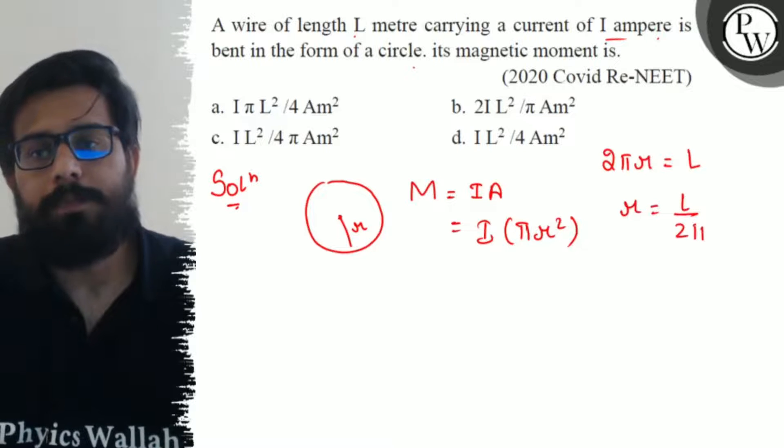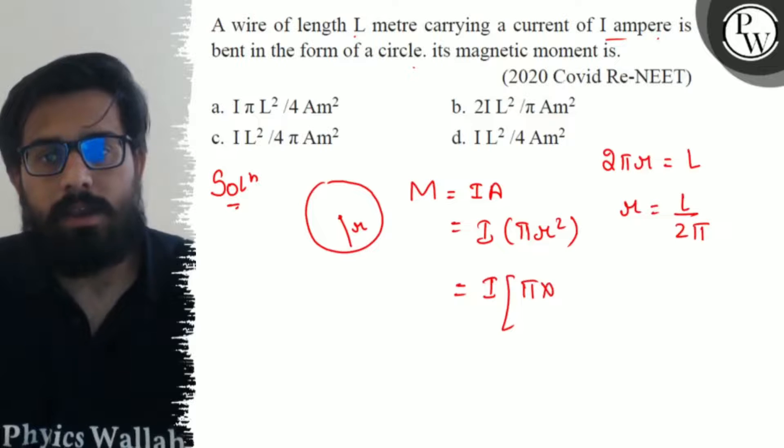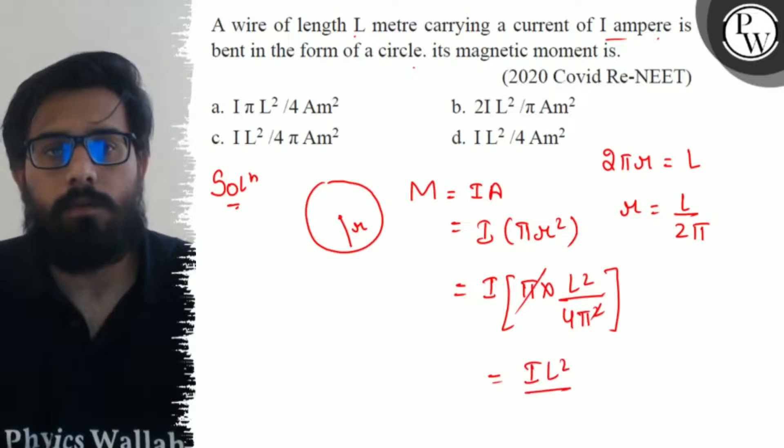So putting the values: I into π into r² is L² upon 4π². So π cancels out. It comes out to be I L² upon 4π ampere meter square.